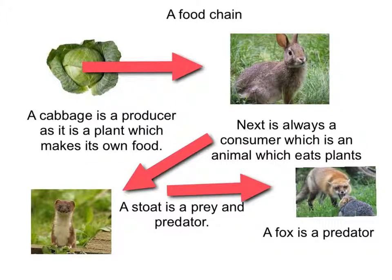A fox is a predator. It is only a predator because it doesn't get eaten by another animal. A cabbage is eaten by a rabbit.